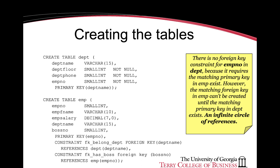Notice that we're creating the department table first because department name, which is a primary key in department, is going to be a foreign key in employee. We have a referential integrity constraint on the values of department name that will show up as a foreign key.